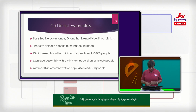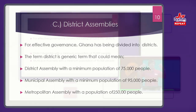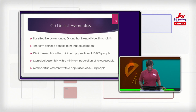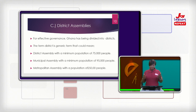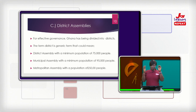Now we come down to the grassroots and we talk about district assemblies — second-level administrative subdivisions in Ghana, below the level of regions. For effective governance, Ghana has been divided into districts. The term district is a generic term. When we talk about district assemblies, we are talking about a local government administration that oversees an area with a minimum population of 75,000 people. So where that particular local area has a population of 75,000 people or below, they are qualified to have a district assembly.